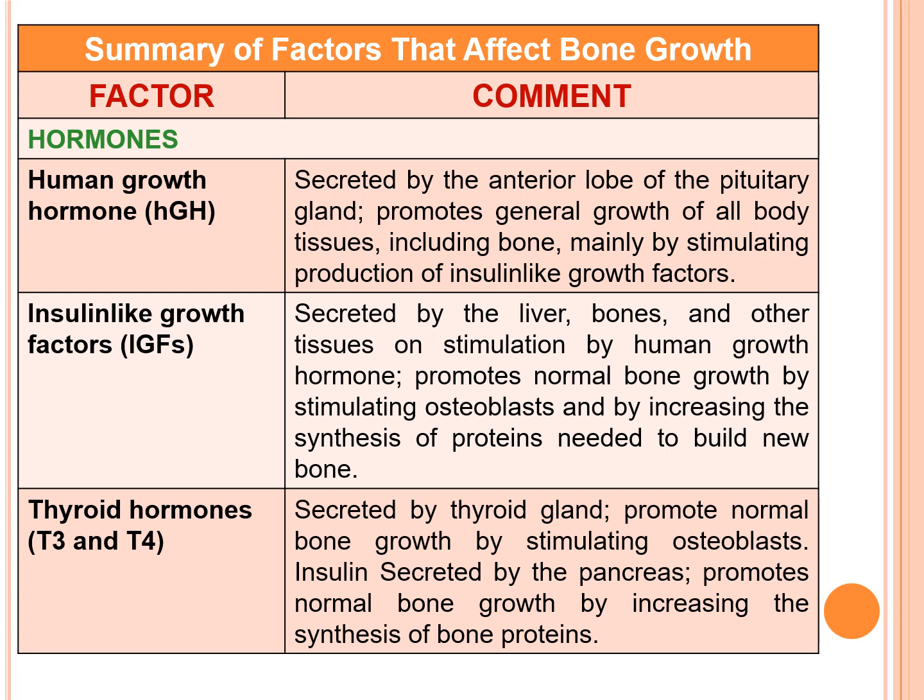Now coming to thyroid hormones T3 and T4. They are secreted by the thyroid gland. They promote normal bone growth by stimulating osteoblast, and they also increase the insulin secretion by the pancreas and promote overall normal bone growth by increasing the synthesis of bone proteins.